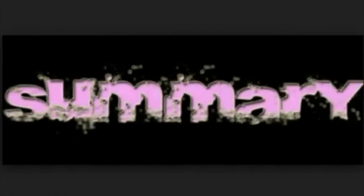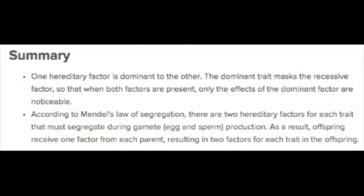Let's summarize. One hereditary factor is dominant to the other. The dominant trait masks the recessive factor so that when both factors are present, only the effects of the dominant factor are noticeable. According to Mendel's Law of Segregation, there are two hereditary factors for each trait that must segregate during gamete production. As a result, offspring receive one factor from each parent, resulting in two factors for each trait in the offspring.